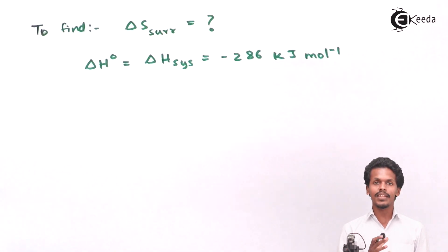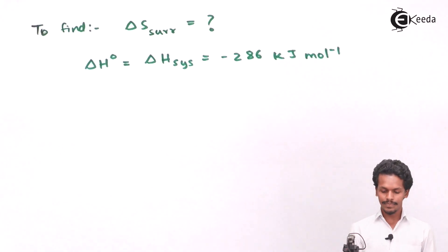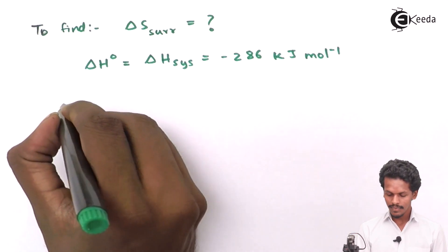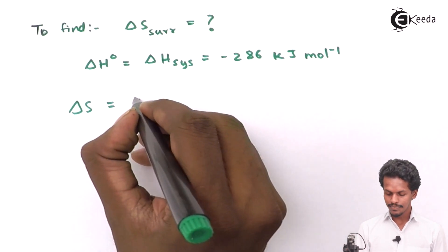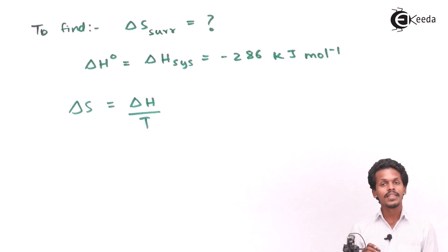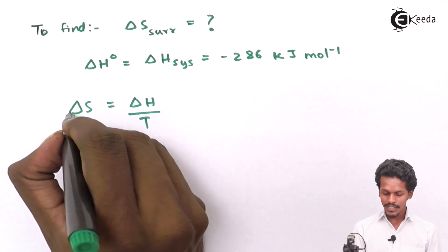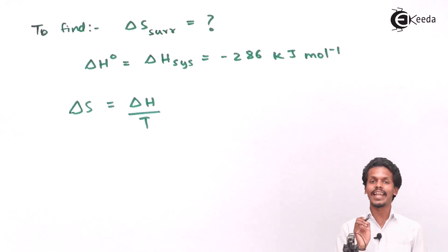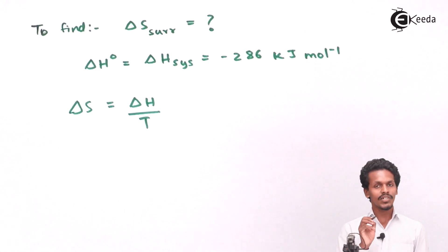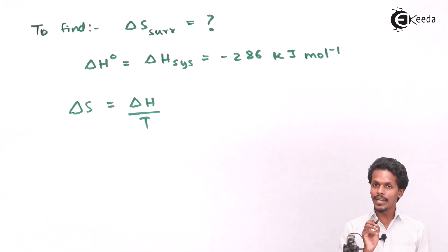We know the relationship between entropy and enthalpy at a particular temperature: entropy change is related to the enthalpy of the reaction divided by the temperature. The temperature provided is standard condition, and as we know, at standard conditions the pressure is one atmosphere while the temperature is 298 Kelvin.